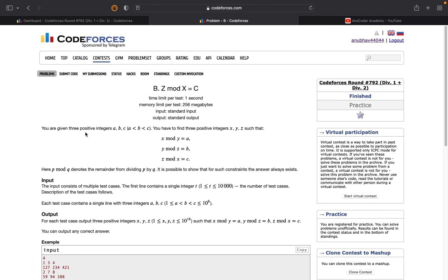The problem states that we are given three positive integers a, b, and c, and we have to find three positive integers x, y, and z. The condition is that x mod y should be equal to a, y mod z equal to b, and z mod x equal to c.